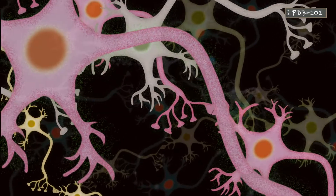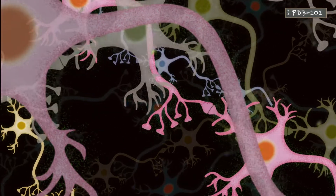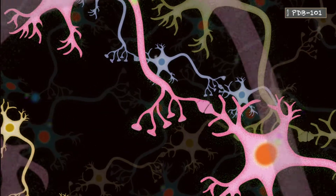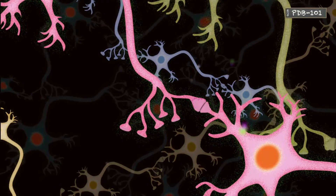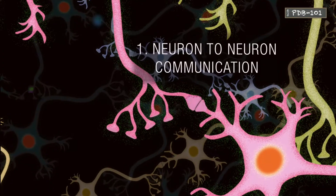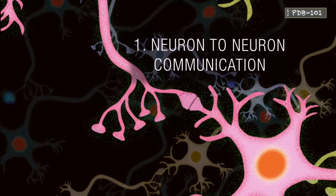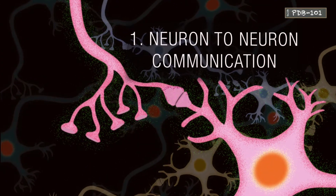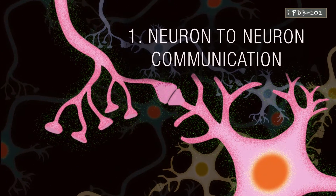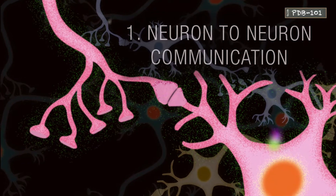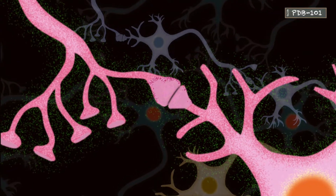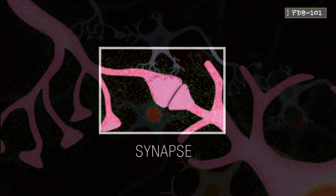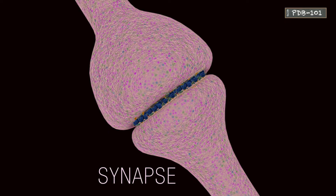Neurons transmit information through two different molecular processes. In the first of these processes, a signal is passed from cell to cell via chemical messengers called neurotransmitters. This occurs at the synapse, the convergence point of two neurons.